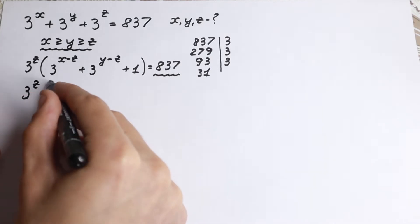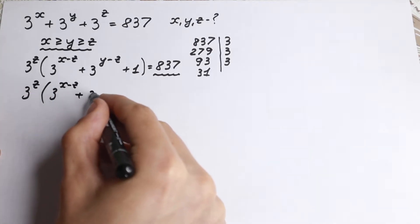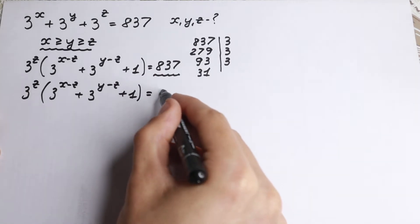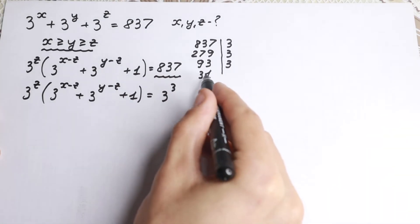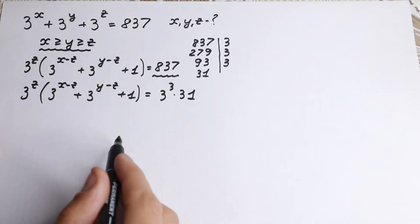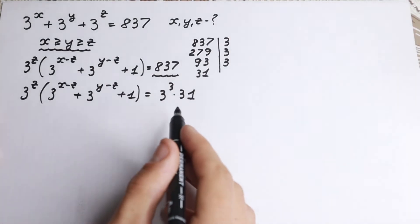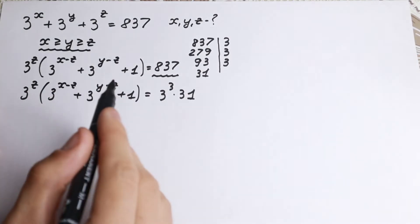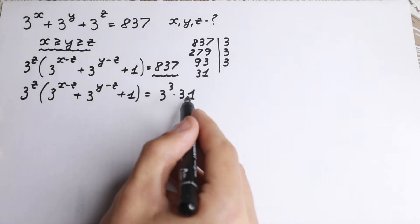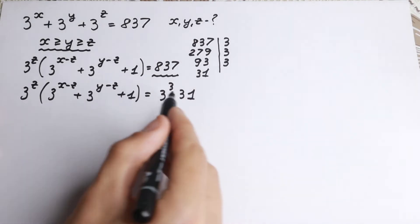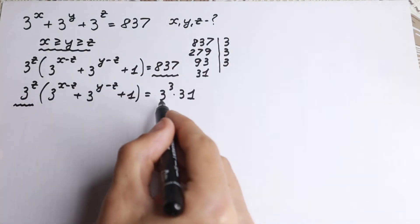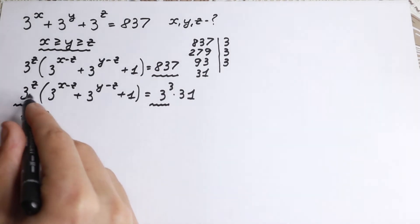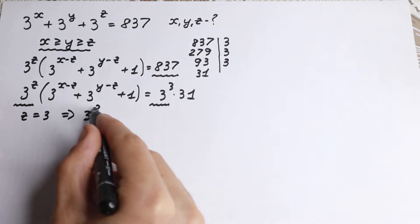So we have 3 to the power z times the quantity 3 to the power x minus z, plus 3 to the power y minus z, plus 1, and this 837 we can write as 3 cubed times 31. We have a product of two elements on the left and 3 cubed times 31 on the right. Looking closely, we can see 3 to the power z on the left and 3 cubed on the right, so we can suppose z equals 3.